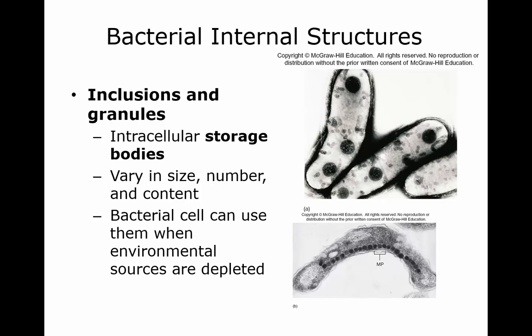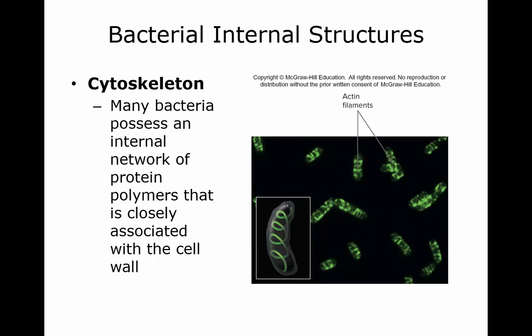They don't have membranes around anything inside that cell. The inclusions and the granules are just for storage, and they vary in size and in number and in what they contain, but the bacterial cell uses them if they deplete their environmental resources and need to use them. The cytoskeleton — a lot of bacteria have this internal network of protein polymers that contributes to cell shape.